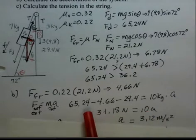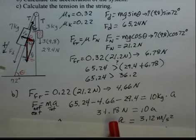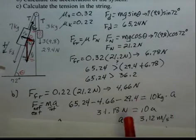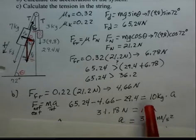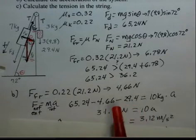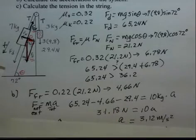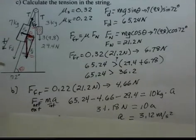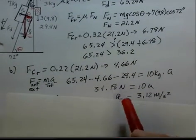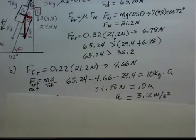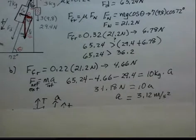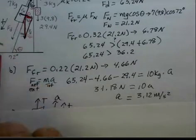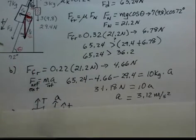The net force is 31.18 newtons. Divide by 10 and the acceleration is 3.12 meters per second squared. That'll be the 7 kilogram object accelerating down the plane at that rate, and the 3 kilogram object accelerating upward at that rate.